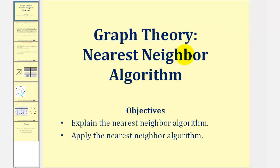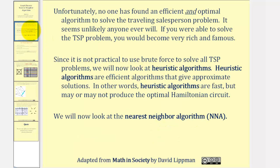Welcome to a lesson on the nearest neighbor algorithm that can be used when attempting to find the optimal Hamiltonian circuit. Unfortunately, no one has found an efficient and optimal algorithm to solve a traveling salesperson problem. It seems unlikely anyone ever will. If you were able to solve the TSP problem, you would become very rich and famous. Since it is not practical to use brute force to solve all TSP problems, we will now look at heuristic algorithms.